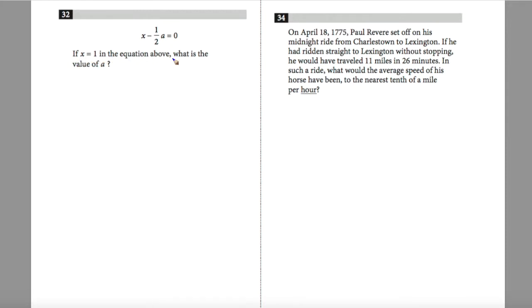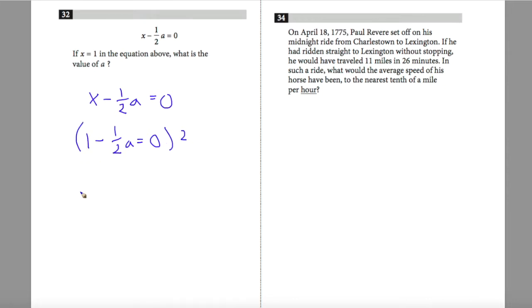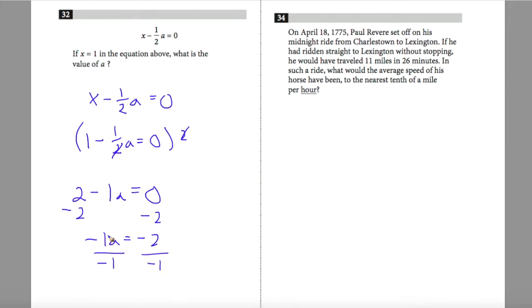Question 32: if x equals 1 in the equation above, what is the value of a? I'll immediately plug in. I have x minus one-half a equals 0, so plugging in: 1 minus one-half a equals 0. To remove the fraction, I multiply the entire equation by 2, giving me 2 minus 1a equals 0. Subtracting 2 gives negative 1a equals negative 2. Dividing by negative 1, I get a equals 2.